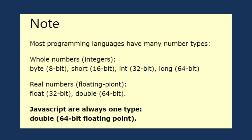In Java, for example, you have: byte, short, int, long, float, and double. But in JavaScript, numbers are stored as 64-bit floating point numbers.